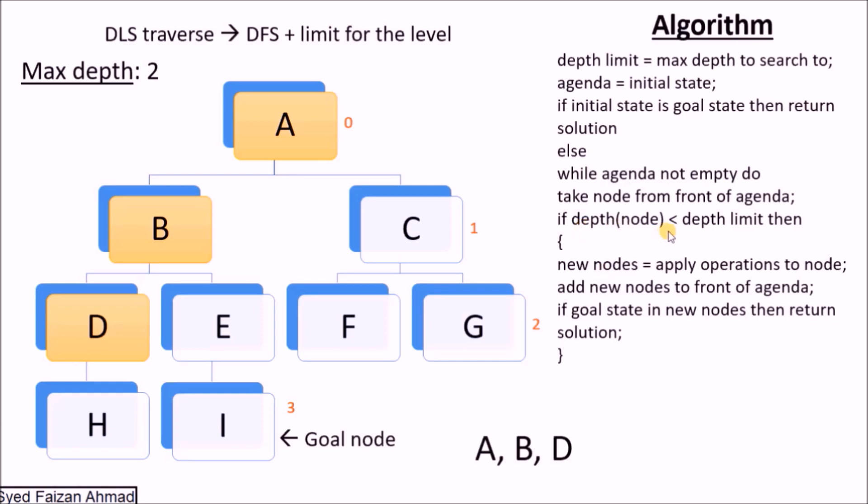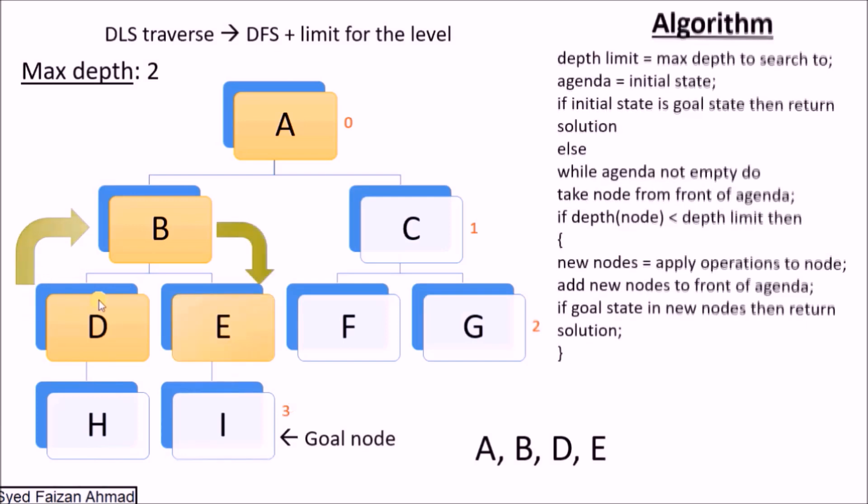Our maximum depth is 2. So now see here: if depth of node is less than or equal to depth limit, then only we will remain in the loop, otherwise we will exit. So we will exit here. Exit means we will backtrack to B.